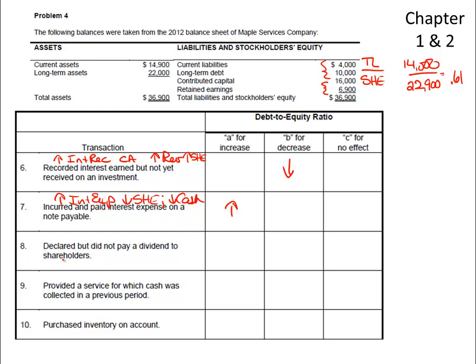We've declared but not yet paid a dividend to the shareholders. Dividends decrease shareholders' equity because it's a contra account, and it also increases dividends payable, which is a current liability. So shareholders' equity is going down and liabilities are going up — the numerator is going up, the denominator is going down, so the debt-to-equity will increase.